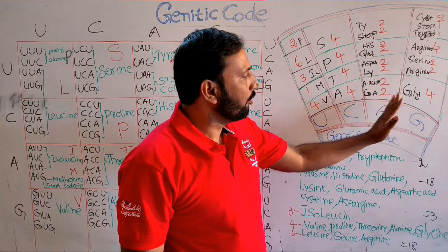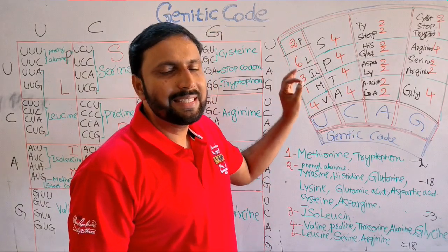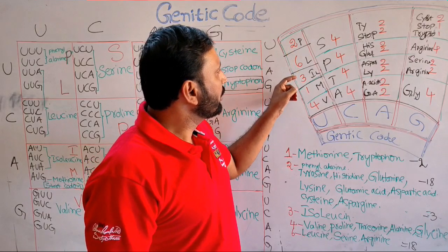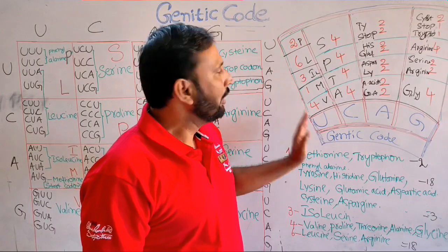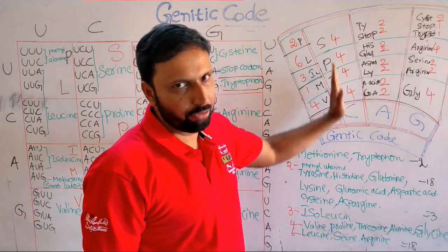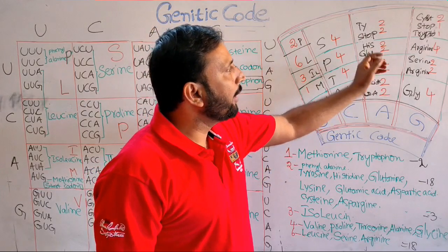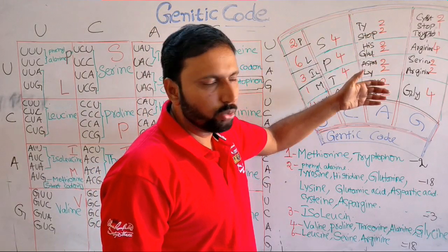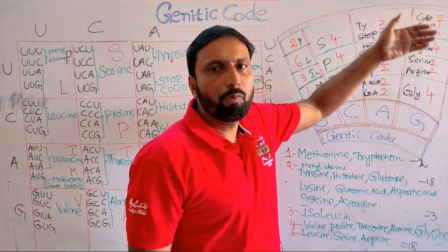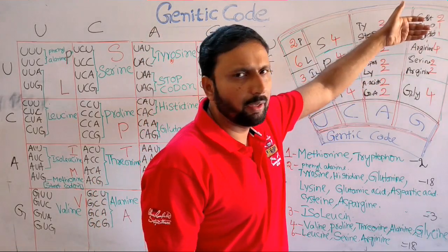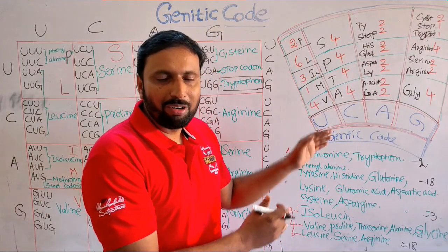Look at here. This is the first row, second row, third row, fourth row. For the first row, the codon count pattern is 2, 6, 3, 1, 4. For the fourth row, the pattern is 2, 1, 4, 2, 2, 4. The pattern 2, 6, 3, 1, 4 applies. All the second row entries are 4s.